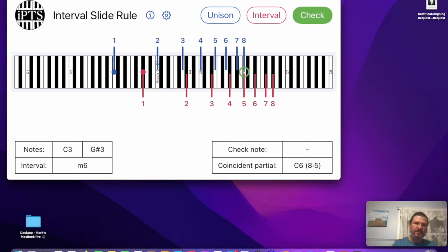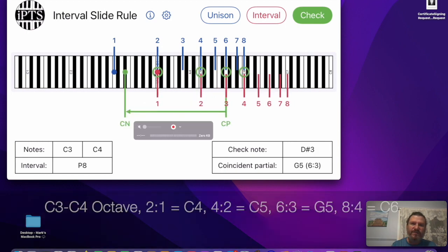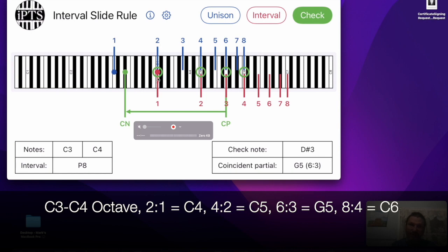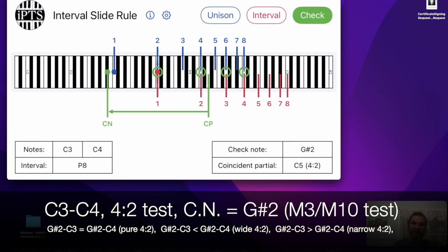Now a common way we use coincident partials is for the octave. So if you throw in the octave there, now you can see all of the coincident partials that we talked about. The 2-1, that's the top note of the octave. The 4-2, that's an octave above the top note. The 6-3, which is an octave and a fifth above the top note. And the 8-4, which is two octaves above the top note. And now by sliding the check note along, we can determine the check intervals for any of these octaves.